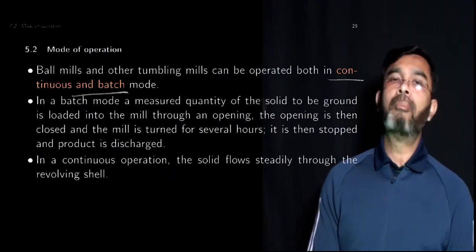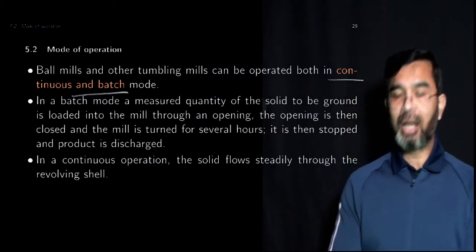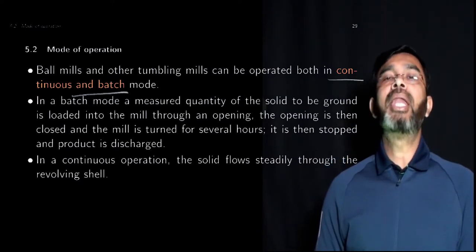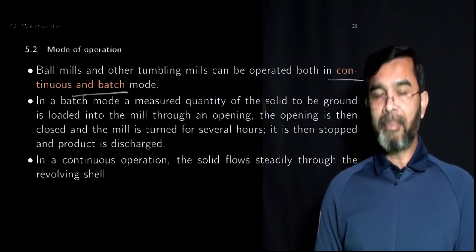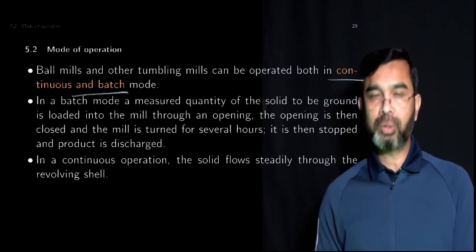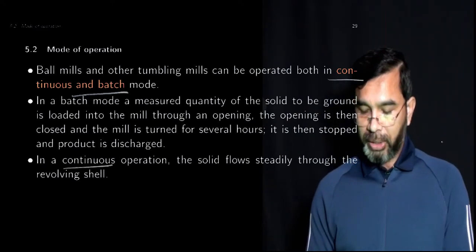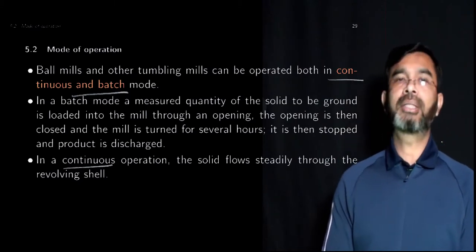Ball mills can be operated either in continuous or batch mode. In batch mode, the materials along with the balls are loaded into the mill, the mill is operated for a certain time, and then it's stopped and the materials are taken out. In continuous operation, the feed flows continuously to the mill and the products are collected on a continuous basis.